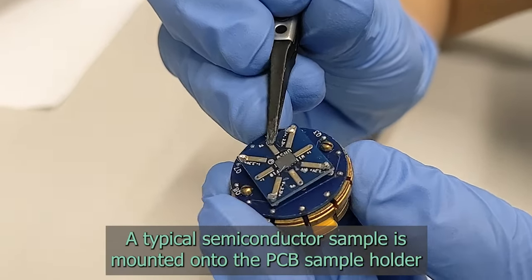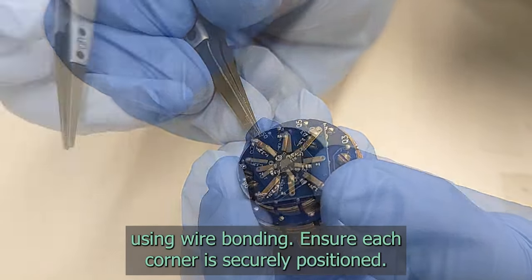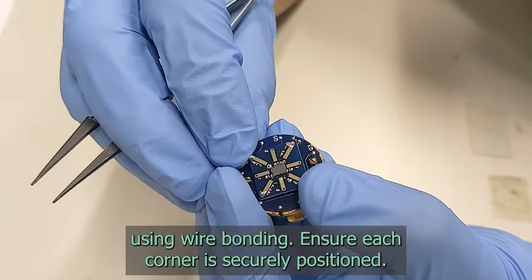A typical semiconductor sample is mounted onto the PCB sample holder using wire bonding. Ensure each corner is securely positioned.